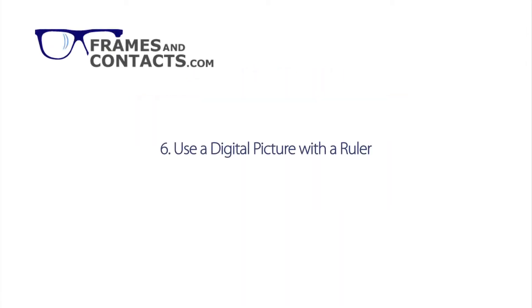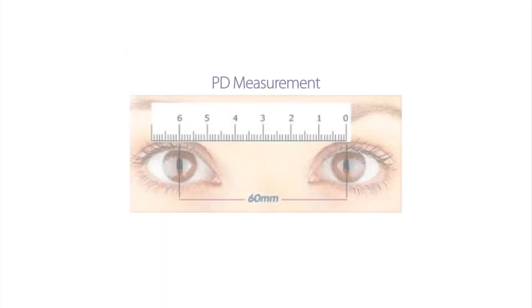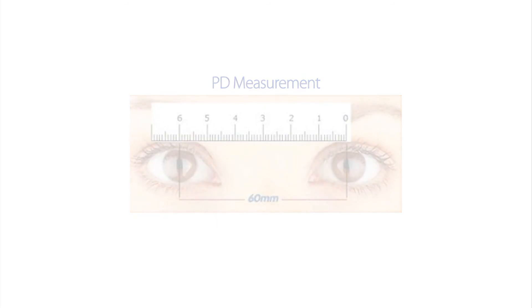Number six, take a digital picture of yourself holding a ruler marked in millimeters flat against your eyebrows just above your eyes. Ensure that the markings on the ruler can be read, and simply email us the picture and we'll calculate your PD measurement for you.